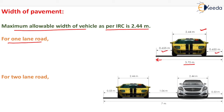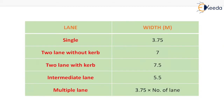For a two-lane road, we have to keep the width of pavement as 7 meter because the width of vehicle is 2.44 meter, the side clearance is 0.53 meter, and the clear distance between the vehicles is 1.06 meter. So the overall width of pavement is 7 meter for a two-lane road.